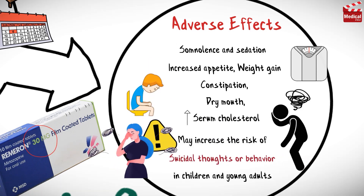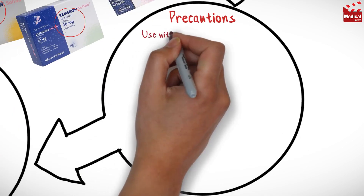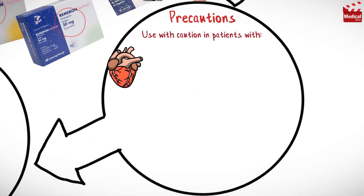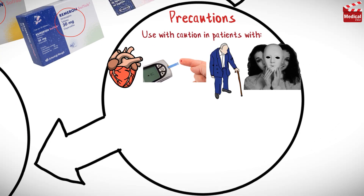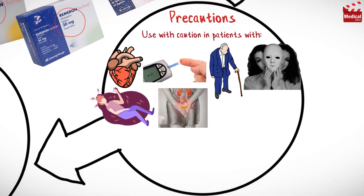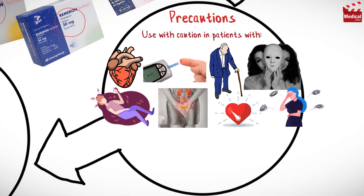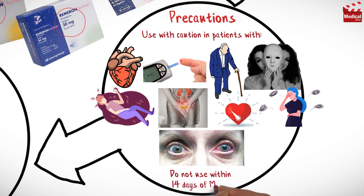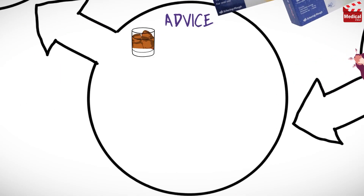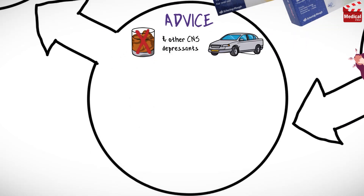Mirtazapine should be used with caution in patients with cardiac disorders, diabetes mellitus, elderly patients, history of bipolar depression, history of seizures, history of urinary retention, hypotension, psychosis, and susceptibility to angle closure glaucoma. It should not be used within 14 days of using MAO inhibitors. Avoid intake of alcoholic beverages and other CNS depressants.